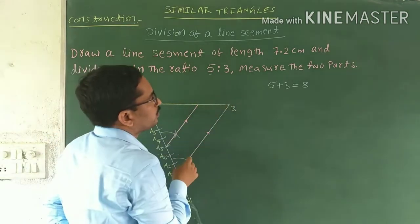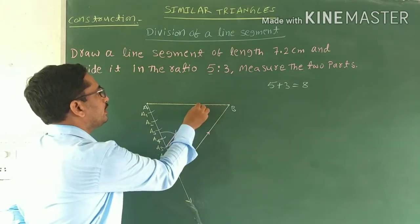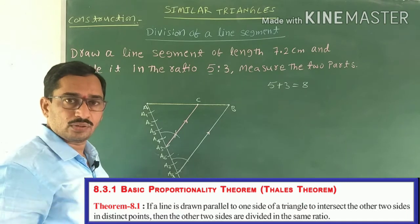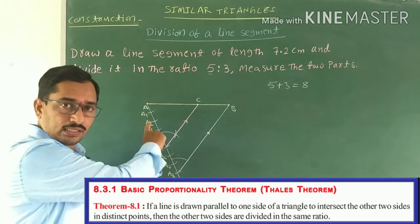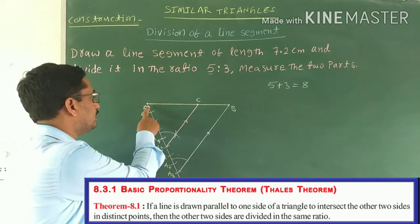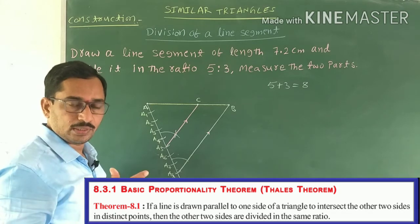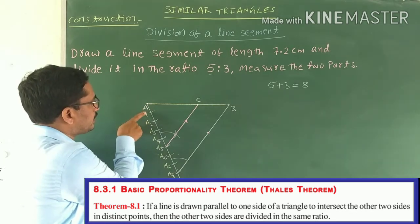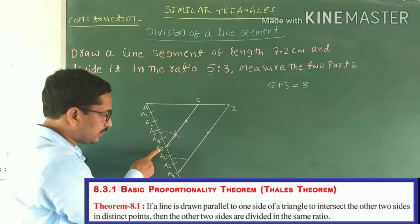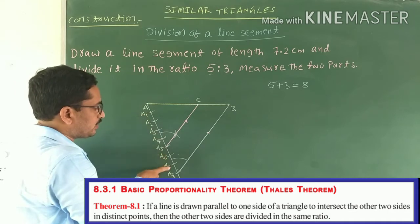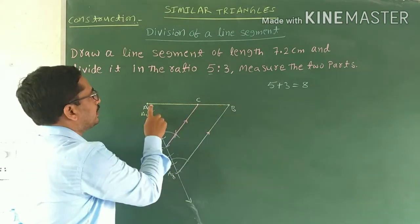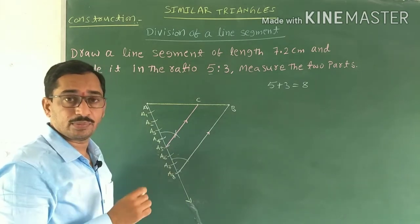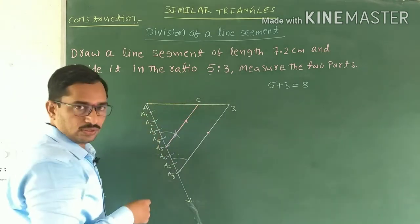The ratio is now divided. This parallel line intersects AB — denote that intersection point as C. From the Basic Proportionality Theorem: if a line is drawn parallel to one side of a triangle intersecting the other two sides at distinct points, those sides are divided in the same ratio. So AA5 to A5A8 equals AC to CB, meaning AC to CB is also divided in the ratio 5:3.